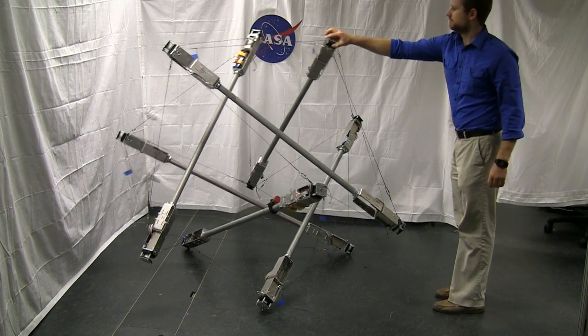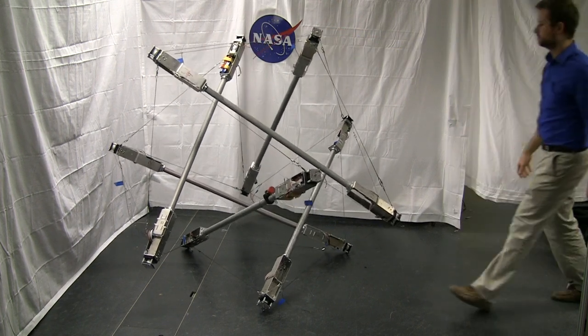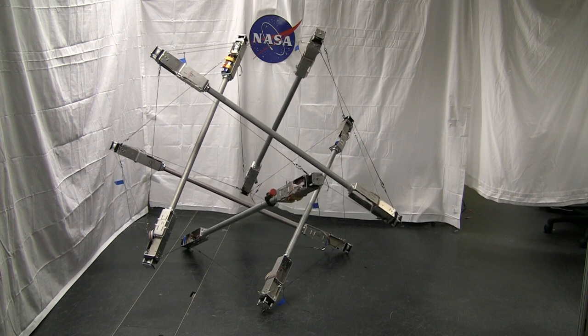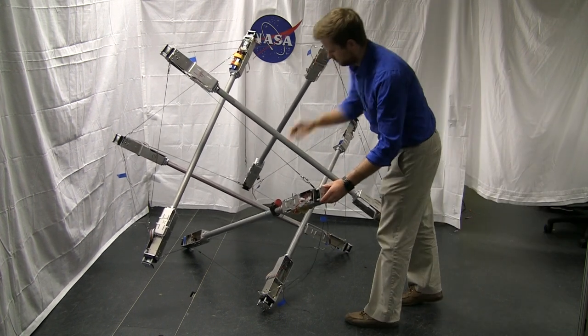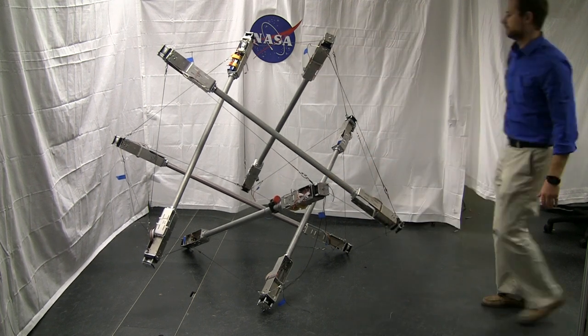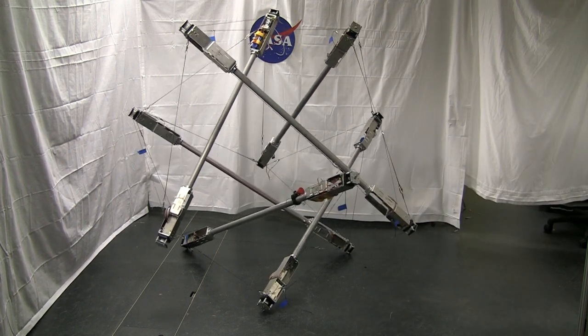Super Ball's compliance can be adjusted dynamically by tensioning its cables. Here, the robot shows low-frequency oscillations at low tensions. Once a motor pulls on a cable, forces distribute through the tension network, increasing system-wide stiffness.